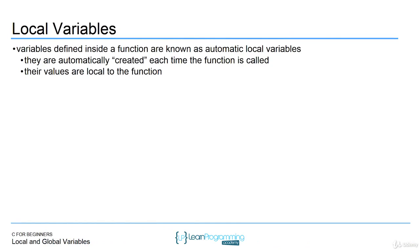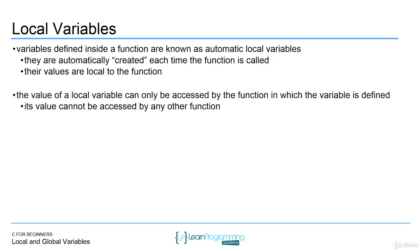We know what functions are, so now I want to talk about local variables. Local variables have to do with more than just functions — they have to do with anything that has a block of code. Variables defined inside of a function are known as automatic local variables. If you declare a variable inside those starting and ending brackets, that variable is local. It will automatically be created each time the function is called, and it can only be accessed within that function — not in other functions.